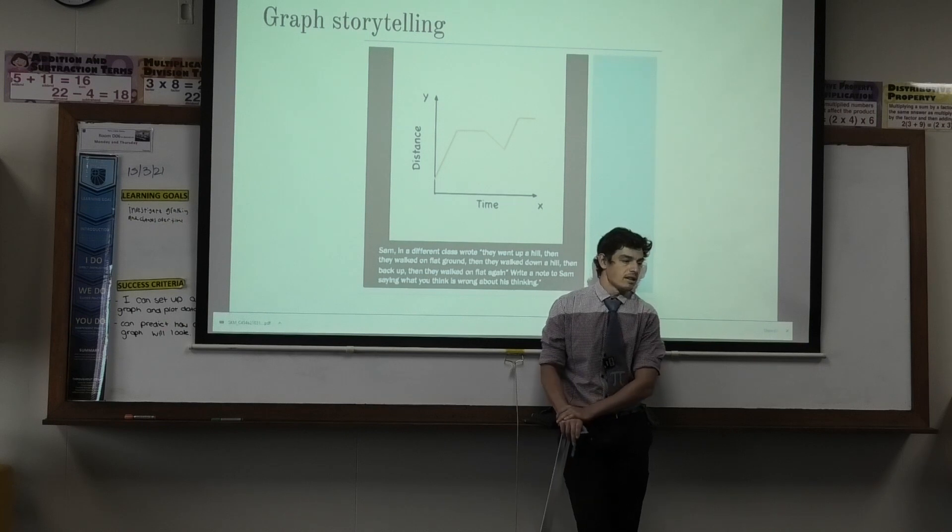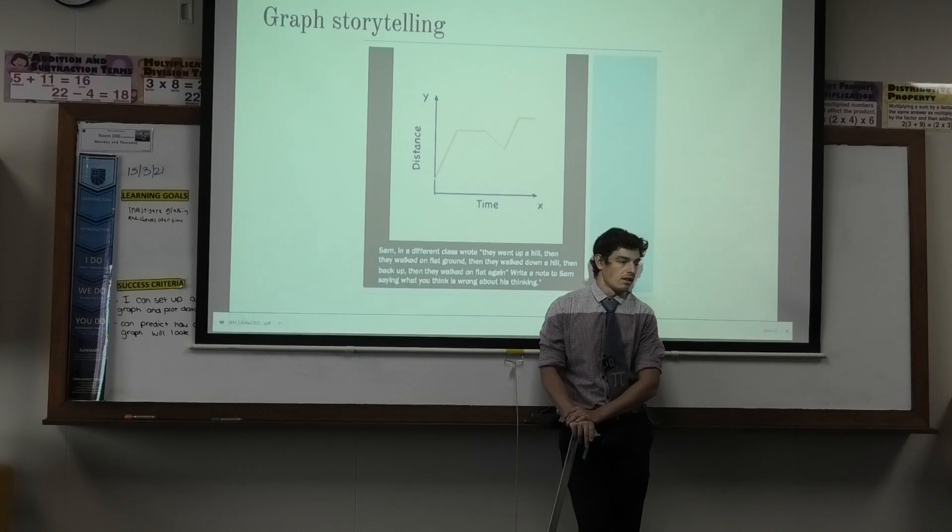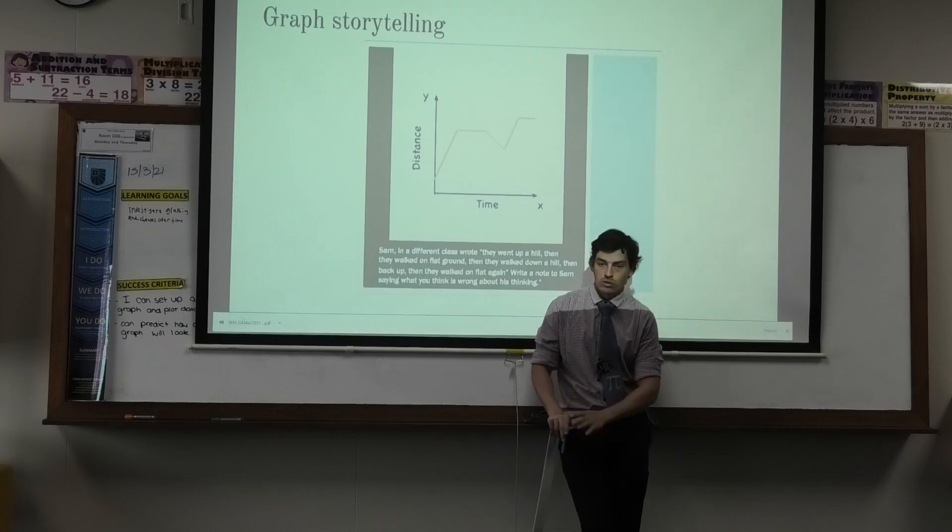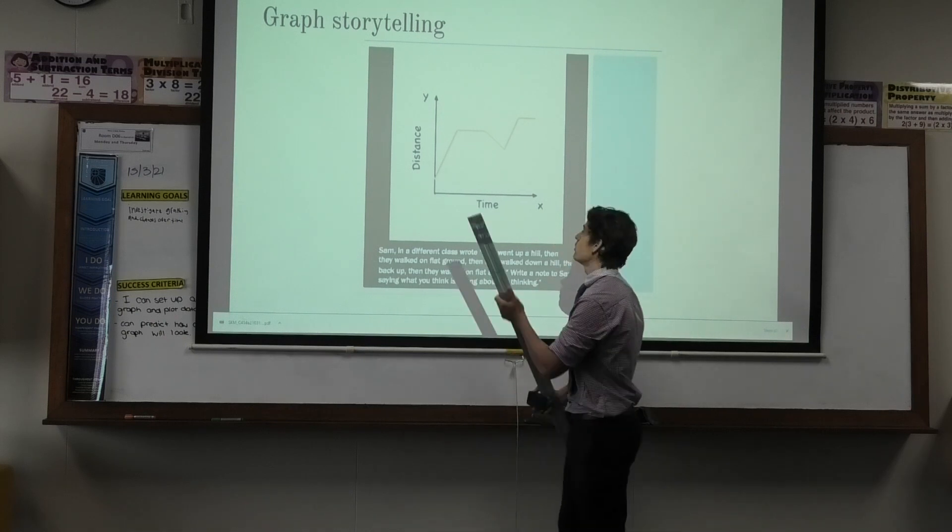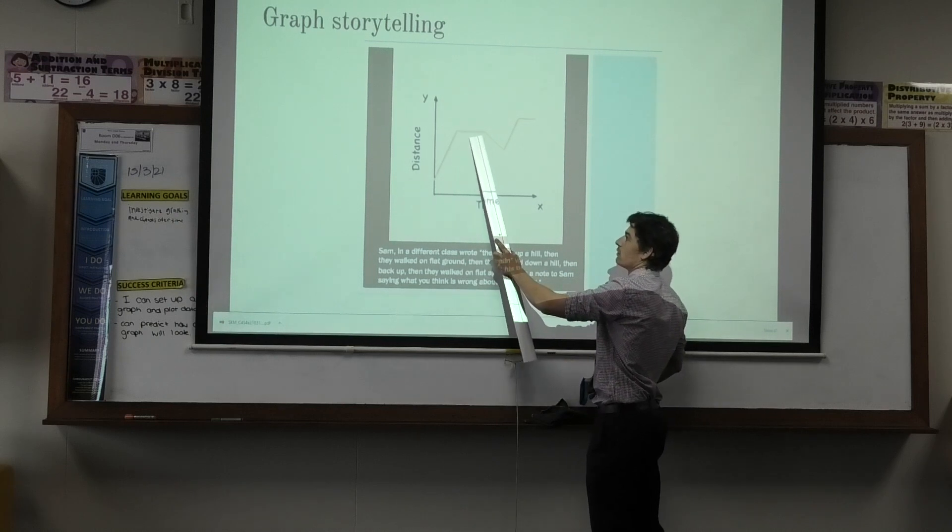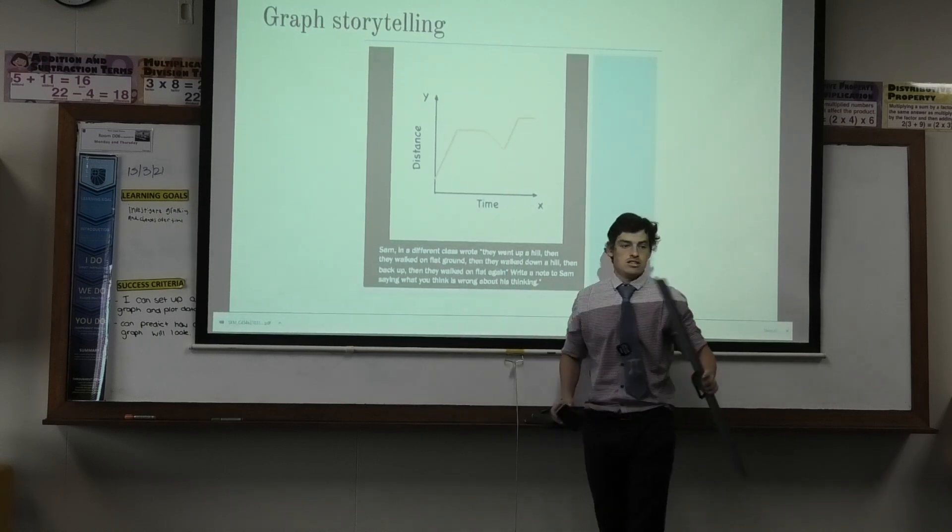Okay, what do you reckon? When he thinks he's gone on the flat line, he'll be on the flat distance. Great point. So what Caden said here, on this flat section, Caden says he's not walking. Does the story say that? Is Caden right?